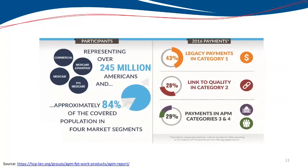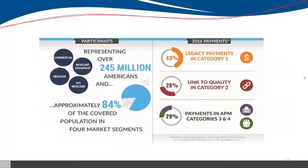In 2016, when the data were analyzed, only 43% were still in category one as those original fee-for-service payments. In category two, which is fee-for-service with some link to quality required, we had hit 28%. By 2016, in categories three and four — the more novel approaches — we see 29% was hit. So we can see we were well on our way in this country to really breaking away from the old fee-for-service payment structure.